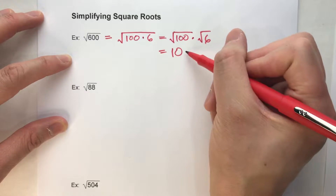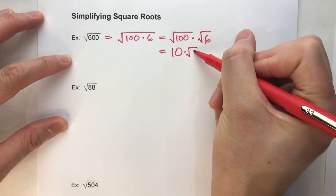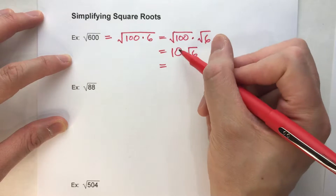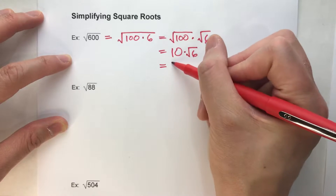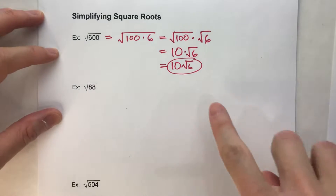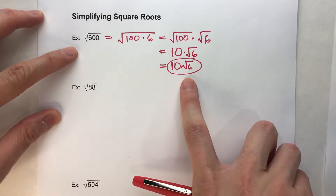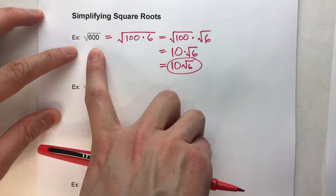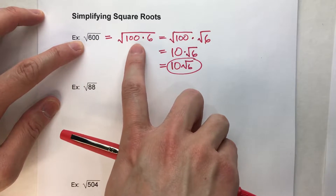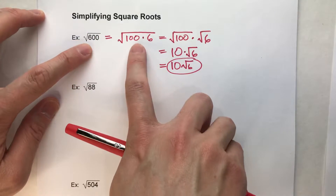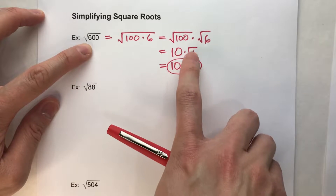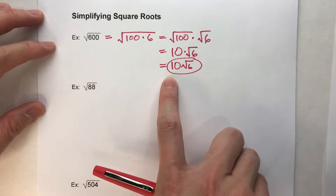The square root of 6 is irrational, so I leave it as times the square root of 6. The way we usually write it — instead of 10 times the square root of 6 — we just write it as 10 root 6. And that is the simplified form of the square root of 600. So what we're doing is finding the biggest perfect square that goes into 600, then taking the square root of it and pulling it out from underneath the radical.